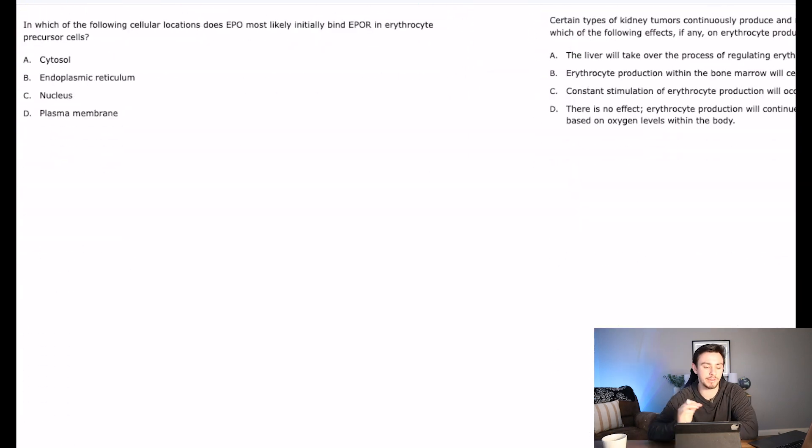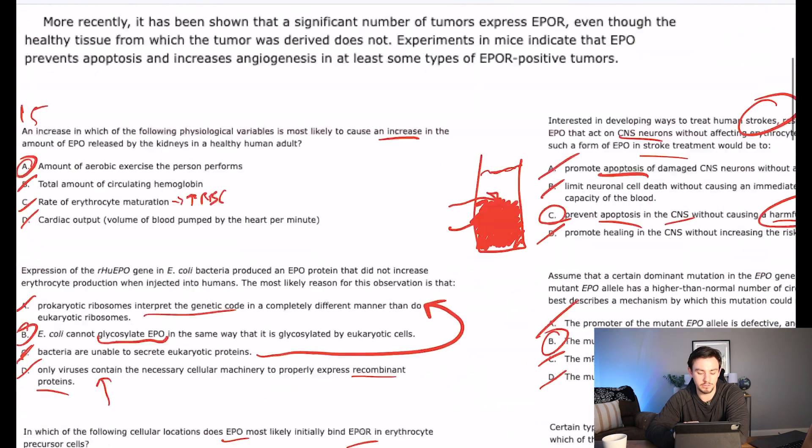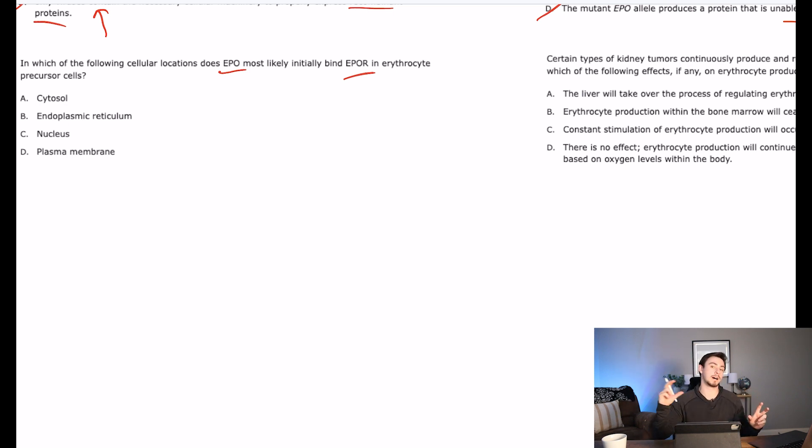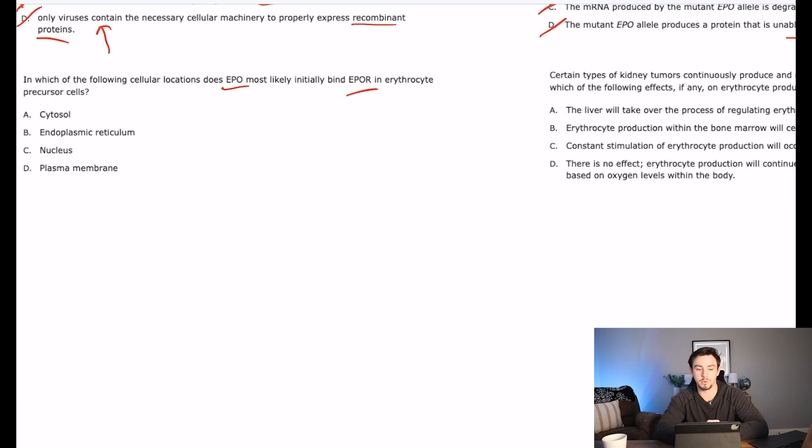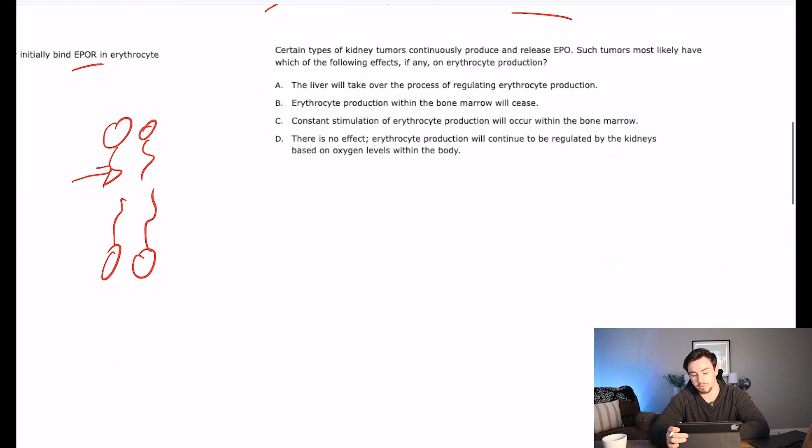Next to last says which of the following cellular locations does EPO most likely initially bind EPO-R in erythrocyte precursor cells? Okay, where does EPO bind EPO-R is the question. Anytime they're talking about like a hormone binding somewhere, the first thing you need to think about is am I dealing with a steroid hormone, a peptide hormone, or some kind of like thyroxine derivative like T3, T4. What does this tell us? It says it's a protein hormone. So where do protein hormones bind is what this question is asking. They bind on the plasma membrane, right? Because they cannot penetrate this phospholipid bilayer because they are only like hydrophilic. They can't get through the tails. So correct answer is D. If it had asked for a steroid hormone, the correct answer would have been the nucleus, or some of them bind within the cytosol.